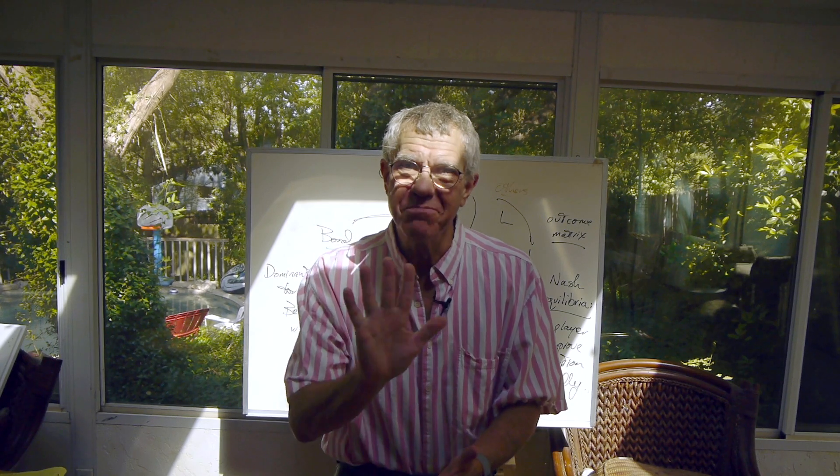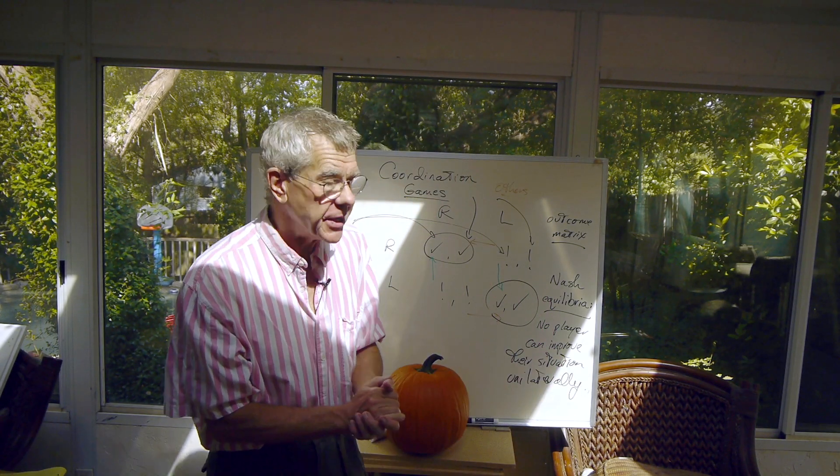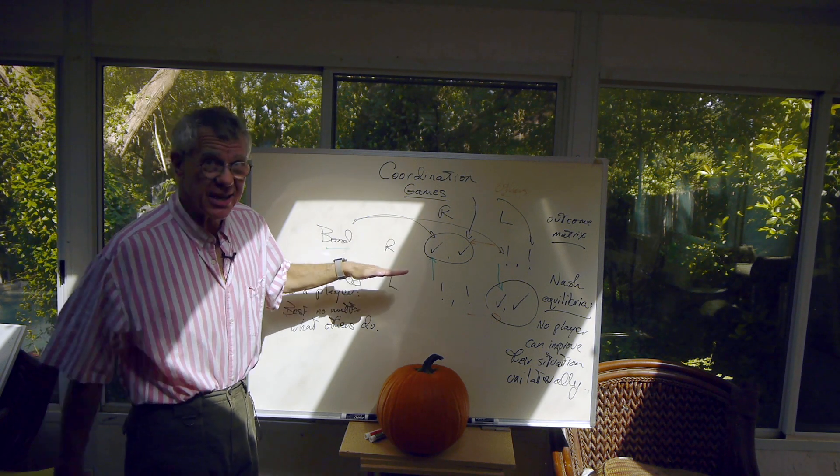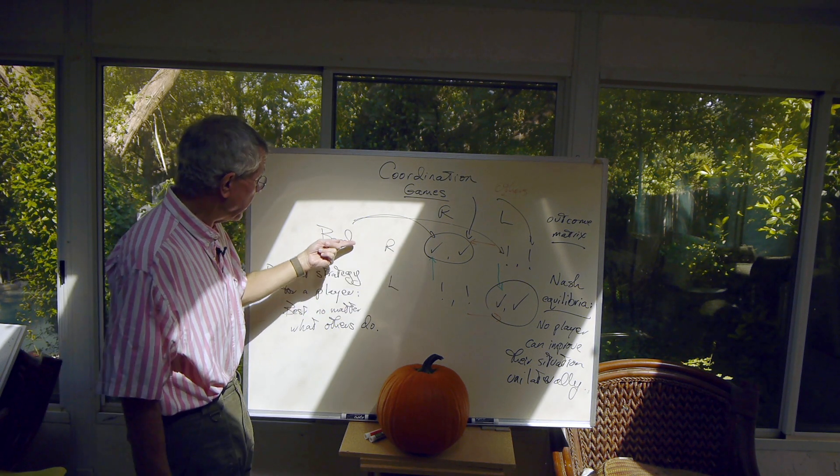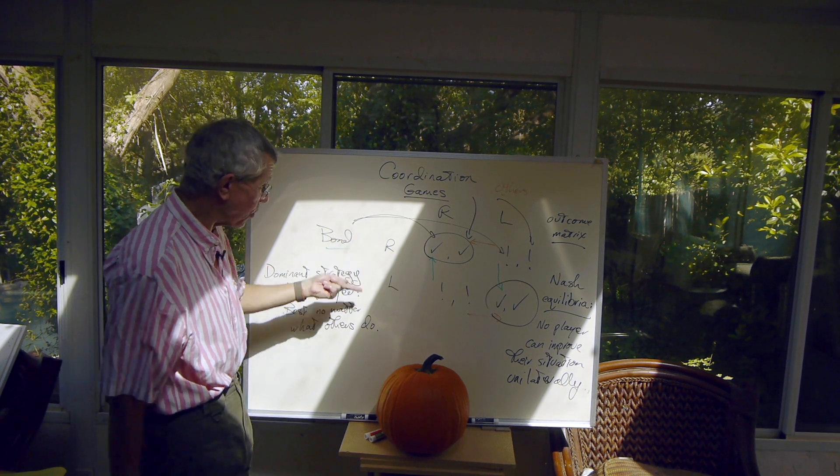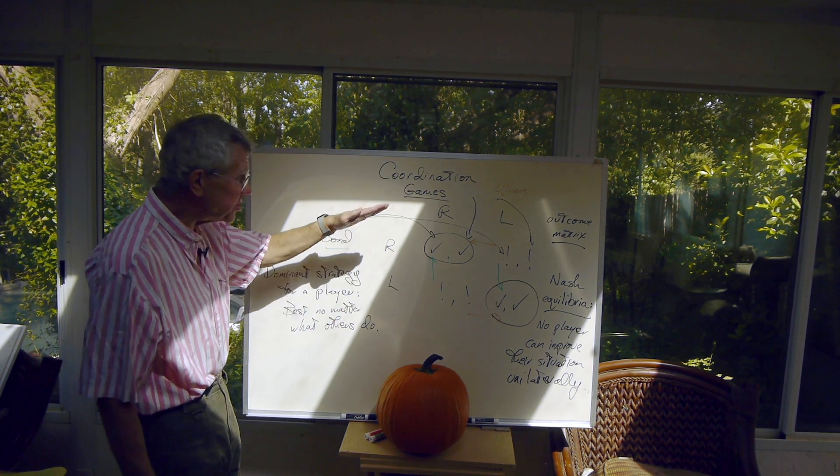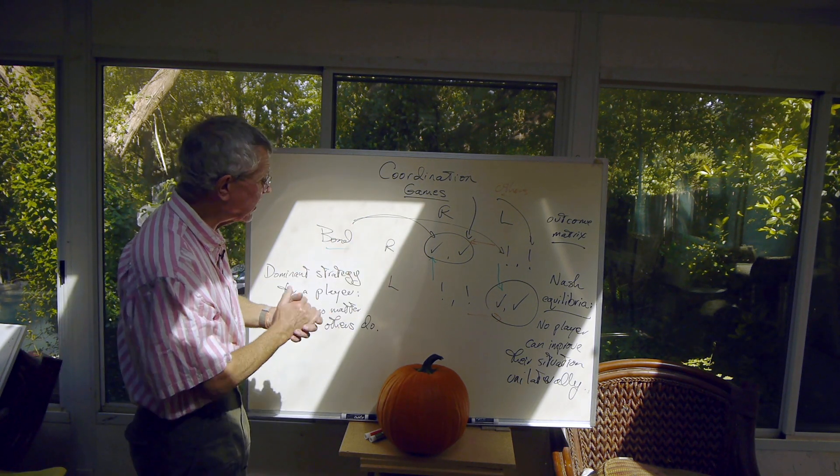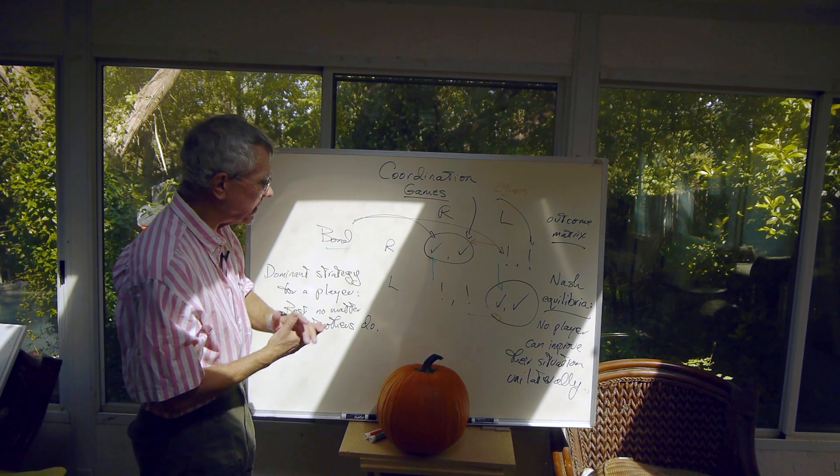A couple of important morals we learn from this little story. One is play a dominant strategy if you have one. That's unavailable to the players here. If it worked out best for Bond to drive on the right no matter what the others were doing, then great, you should drive on the right. Here nobody has that kind of strategy. They've got to adapt to what the other players are doing or coordinate with them, hence the name of this kind of game.